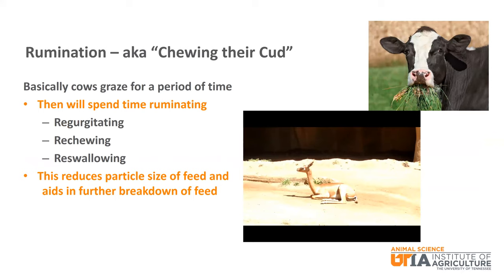Many people talk about cows chewing their cud — this is actually the rumination process. Cows will graze for a period of time and then will ruminate, which basically consists of regurgitating, re-chewing, and re-swallowing the forages that they have consumed. This works to reduce the particle size and aids in further digestion. Chewing cud is a very important part of the digestion process for cows.